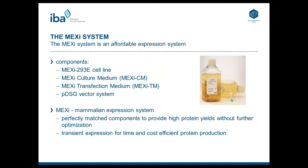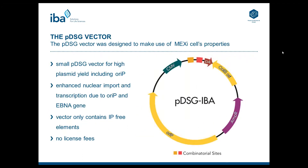Let's have a more detailed look at the components of the Maxi system. The first component is the Maxi 293E cells — HEK 293E cells where the Epna gene works together with the PDSG vector system. The second component is the Maxi cultivation medium, which has agents that prevent cells from clumping, but these agents also prevent effective PEI transfection. Therefore we developed a separate transfection medium without those substances. The cultivation medium has a very low biotin content of only 120 micrograms per liter, and the transfection medium does not contain any biotin.